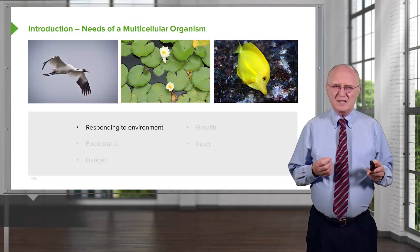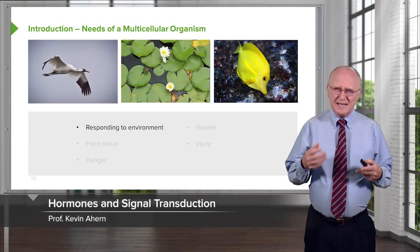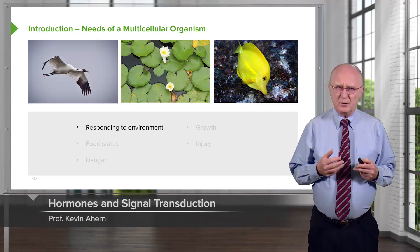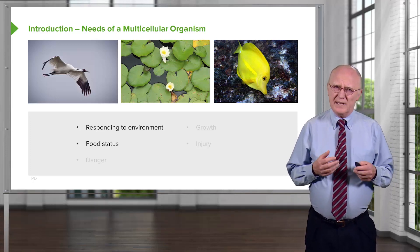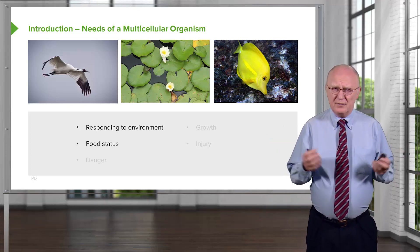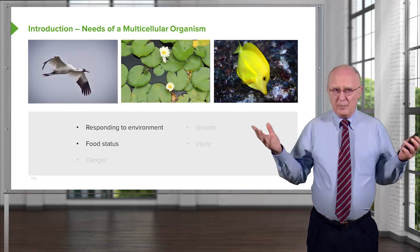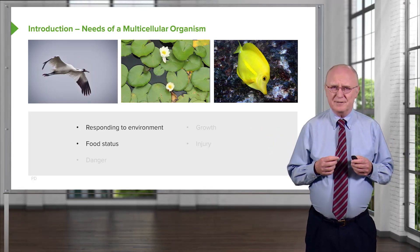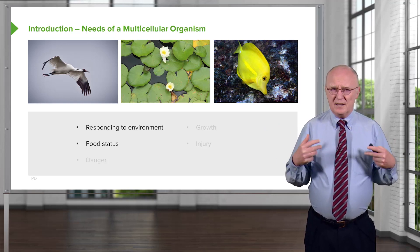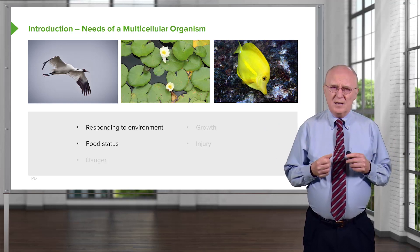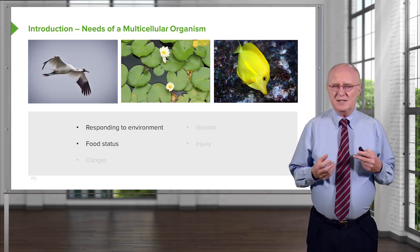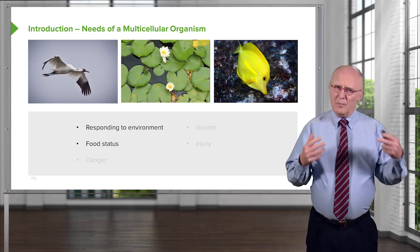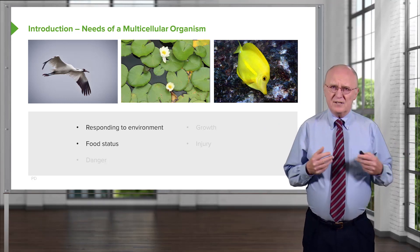Multicellular organisms have unique needs in responding to the environment they're in. Those needs relate to, for example, food status — I'm hungry, I go out and want to get some food to eat. At the cellular level within the body, the individual cells have the same needs, and they have to communicate with the rest of the body about their needs to get nutrients.